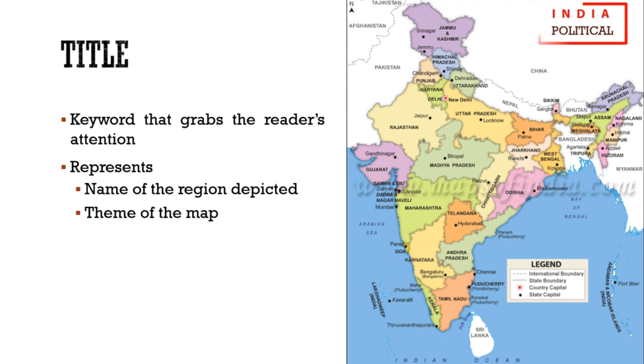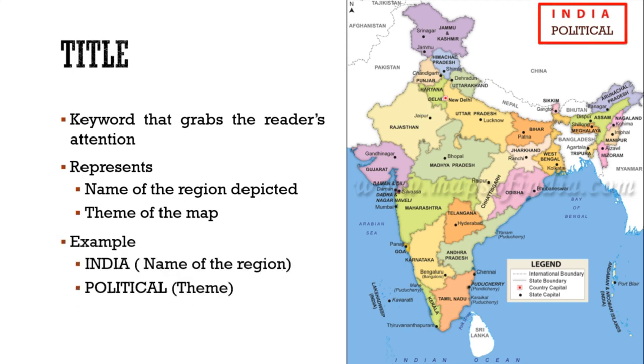For example, the title of the given map is 'India Political.' Here, 'India' represents the name of the region and 'political' is the theme of the map.